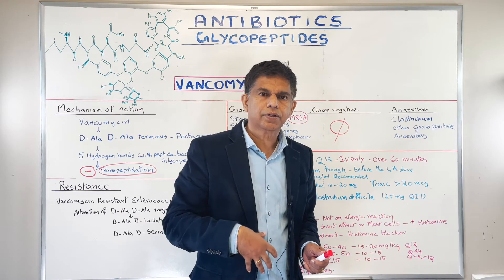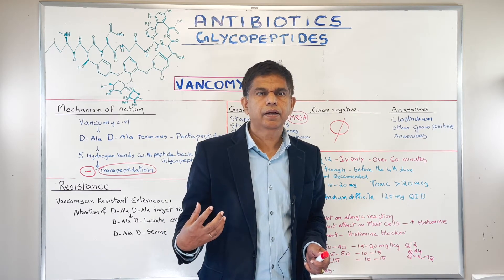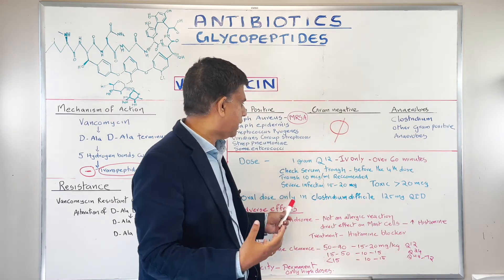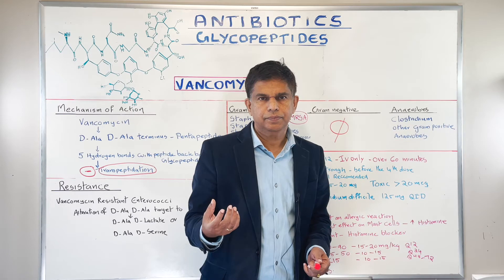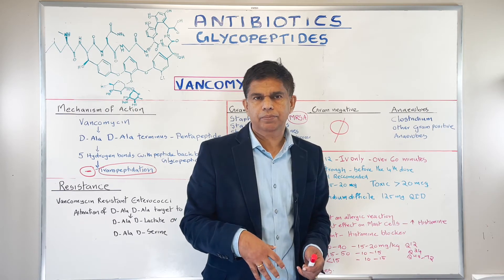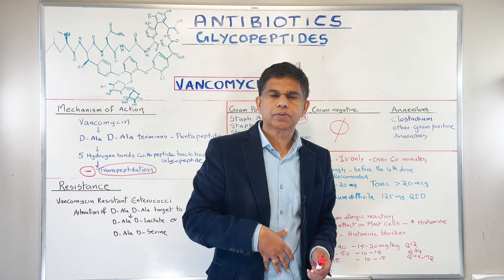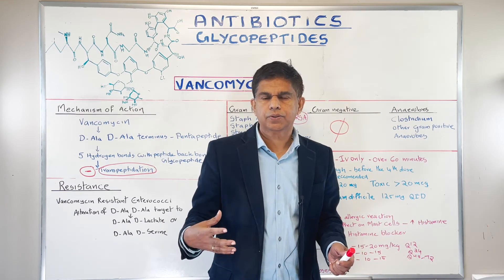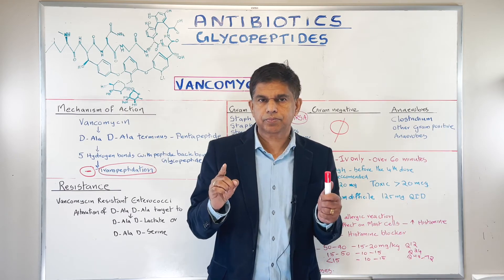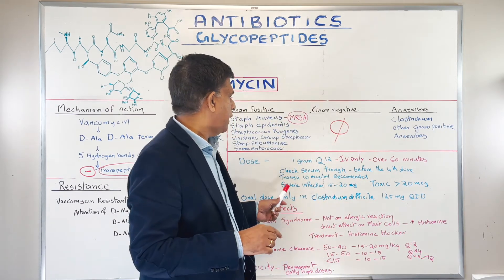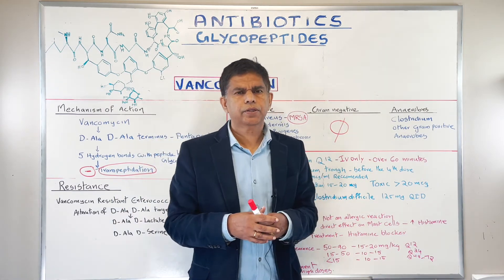We can give vancomycin orally in only one situation: to treat Clostridium difficile colitis. You want the drug to go into the colon to kill the bacteria. The oral dose in that case is 125 milligrams four times a day. It is not systemically absorbed — it travels through the colon and kills the bacteria locally. So give oral vancomycin only in C. difficile infections.